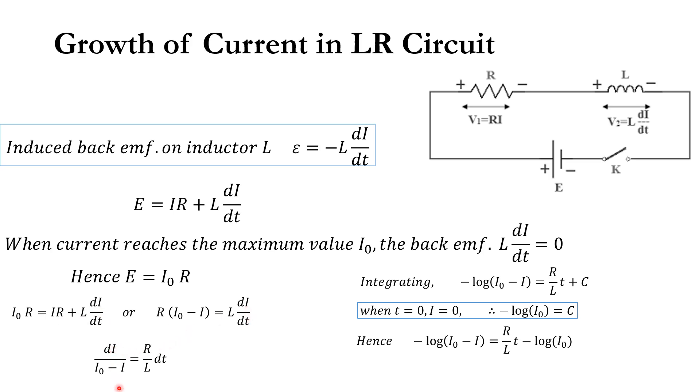Separating variables: dI divided by (I₀ minus I) equals (R/L)·dt. Now we integrate both sides.